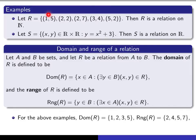For this particular example here, the domain is simply the set of all the first elements that you see in the ordered pairs. So it's 1, 2, 3, and 5 for the first example, and the range is the set of all second elements that appear: 2, 4, 5, and 7.